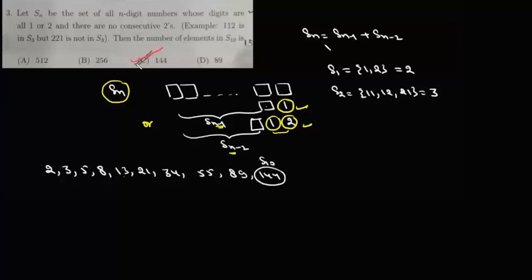So basically this SN is SN-1 plus SN-2. It's a recurrence relation, and in order to find the value of S10, first we find S1 and S2. S1 is when we have only one element, so there will be two such numbers: either 1 or 2. And for S2, it will be 1-1, 1-2, 2-1, but not 2-2, so S2 is 3. So this is your S1 and that's your S2.